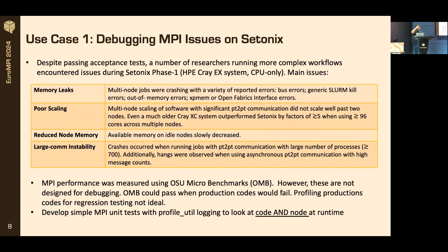The use case: I'm using Setonix as a motivator. We had all these MPI issues in Phase 1 Setonix - a real conundrum, like a game of Cluedo. We just had multi-node jobs that would crash with a variety of errors: bus errors, generic SLURM out-of-memory errors, XPM - every sort of error message you can imagine would just show up.